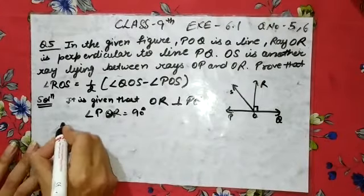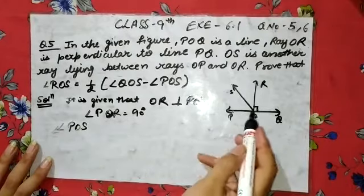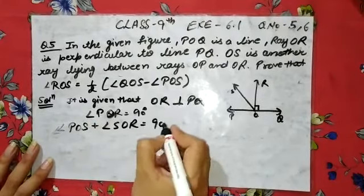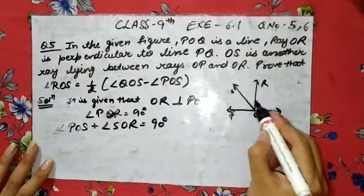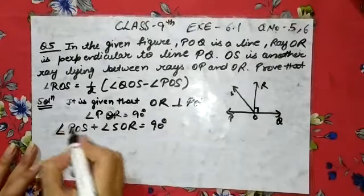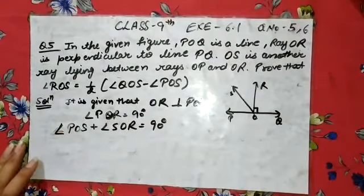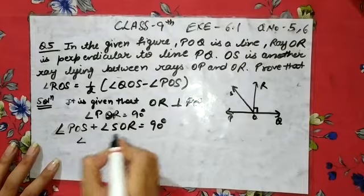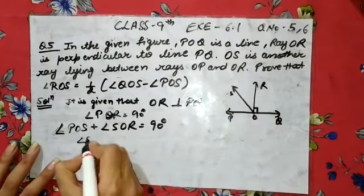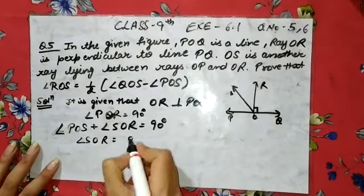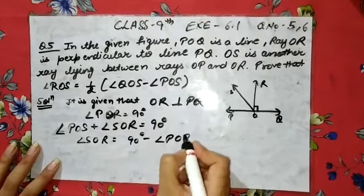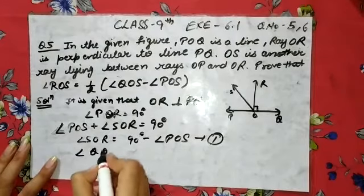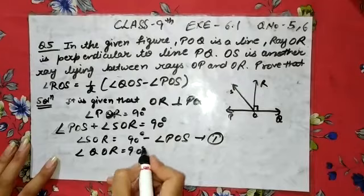After that, angle POS plus angle SOR is also 90 degrees, because adding these two parts makes up the full angle POR. So from this, the value of angle ROS (or SOR) equals 90 degrees minus angle POS. Write this as the first equation.